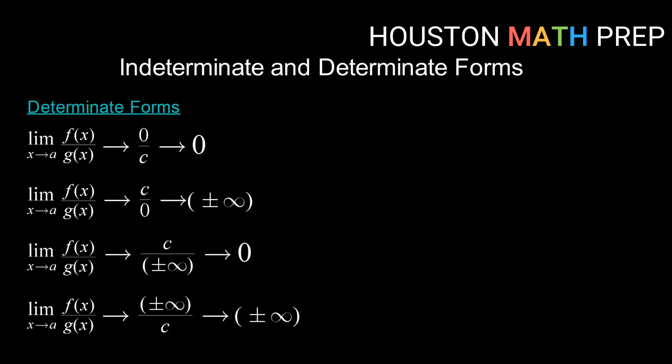What we mean by that is determinate forms are going to be forms that we can immediately evaluate and know what they go to. Indeterminate forms, which we'll see in just a moment, are going to be ones that we don't know just by looking what happens to them, and we need to take additional steps to figure out what's going on with that limit.